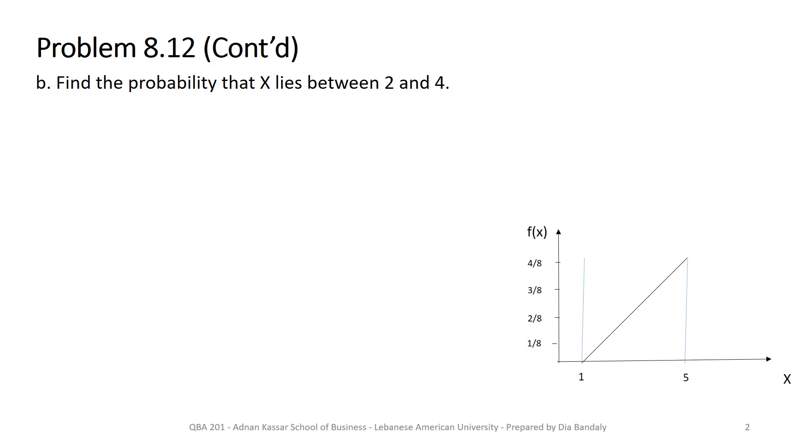So now that we have already drawn our PDF, as you can see on the bottom right hand side, that's what we did in the previous slide. Now we are ready to find probabilities. And part B asks for the probability that x is between 2 and 4. So let's see where is this on the curve. We want x to be between 2 and 4. So we know that probability is the area under the curve. So we're looking for this area, and I will call that A1.